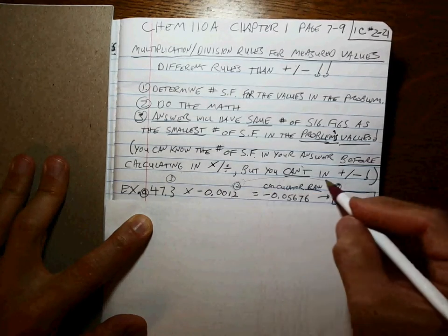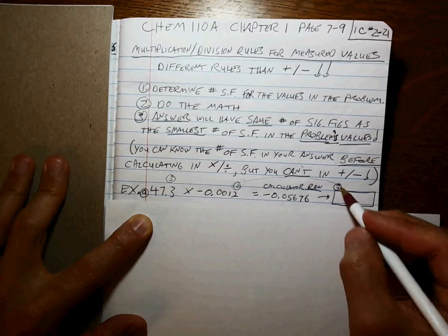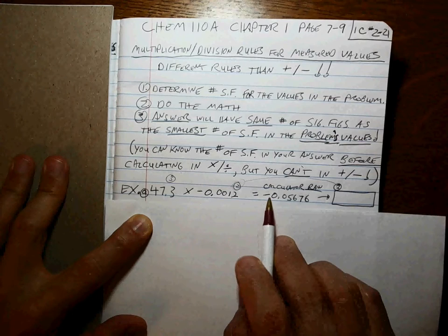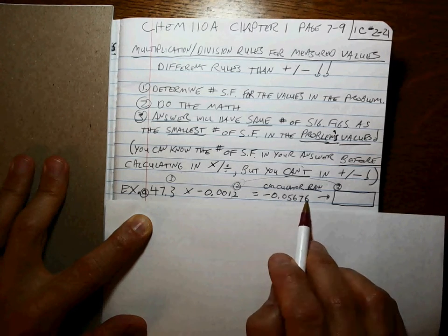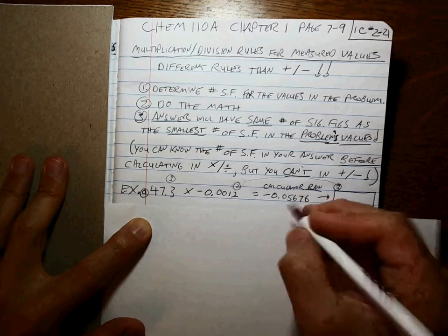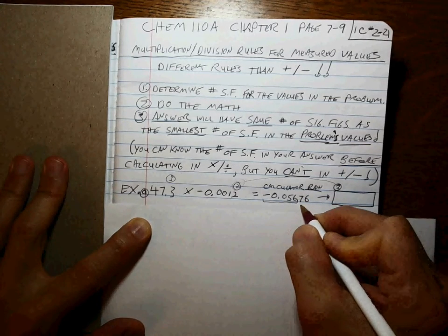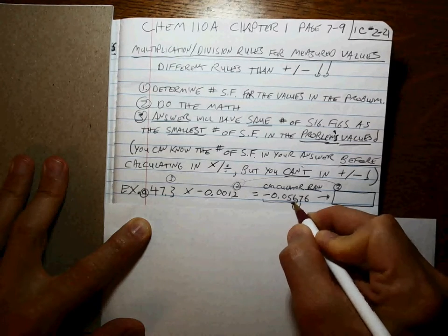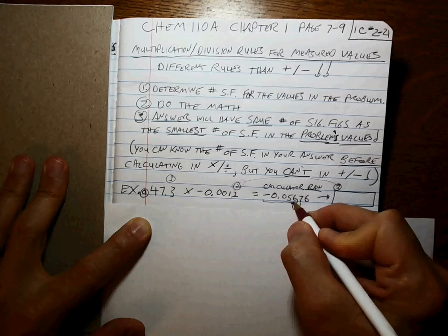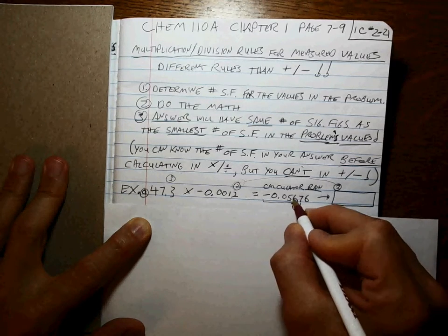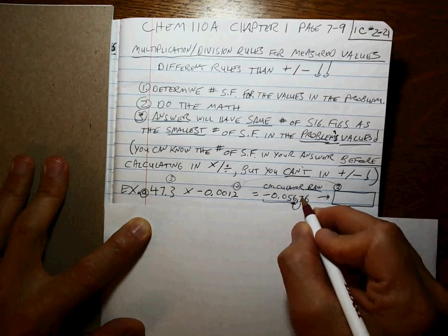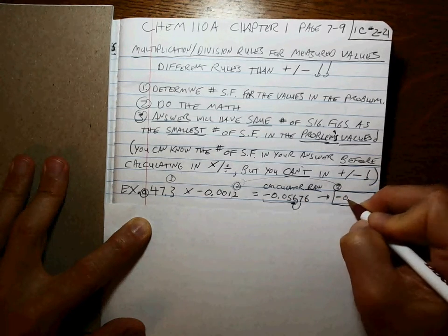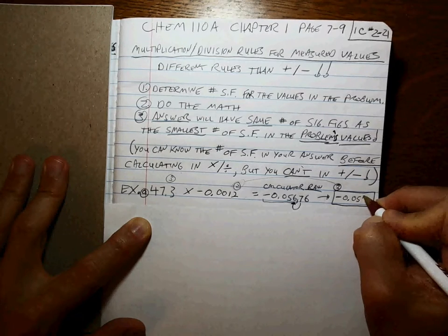Punch that into your calculator. This is the raw value: negative 0.05676. So what I like to do is I like to say these are the significant ones, and then you decide if that one rounds up. Does that last significant figure round up? It does because that number is greater than 5.